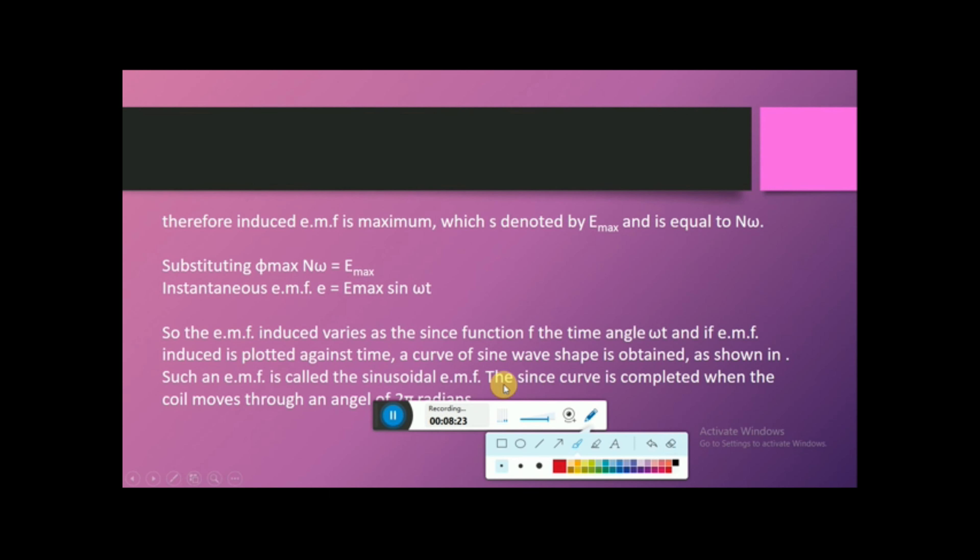Therefore, induced EMF is maximum, which is denoted by E maximum and equals N omega phi maximum. The instantaneous EMF equals E maximum sin omega t. The EMF induced varies as a function of time angular omega t. If EMF is plotted against time, a curve of sine wave shape is obtained.